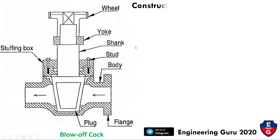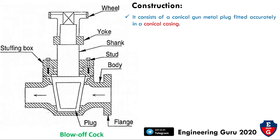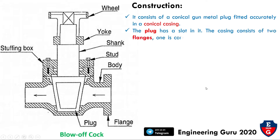Now let's start with the construction. It consists of a conical gunmetal plug fitted accurately in a conical casing. Here in the schematic diagram we can observe this — this is the plug, fitted in the conical casing, and this is the casing. The plug has a slot in it.